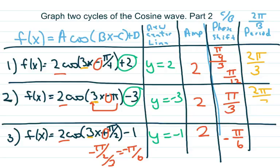That's 120 degrees. So wherever we start — for example, if we start at pi over 12, we're going to add 2 pi over 3. If we start at pi over 3, we're going to add 2 pi over 3. Negative pi over 6, we're going to add 2 pi over 3.